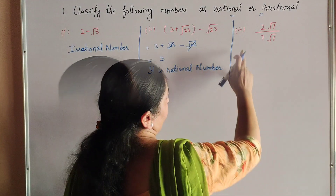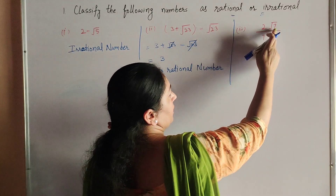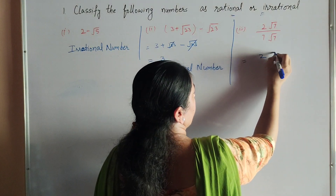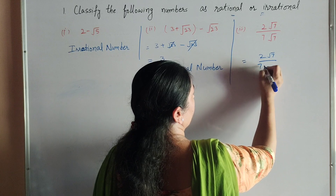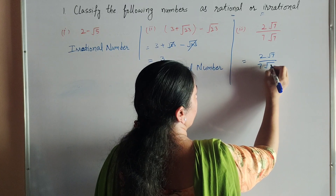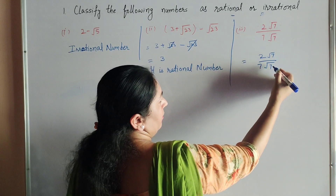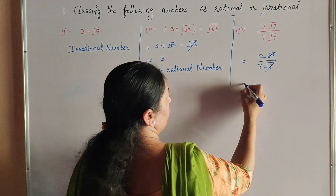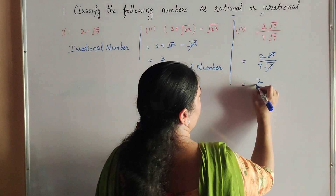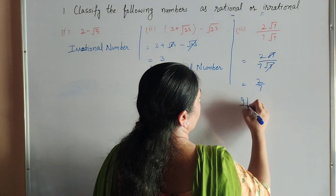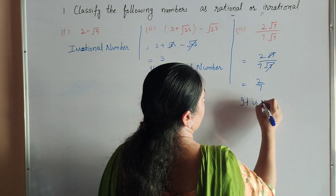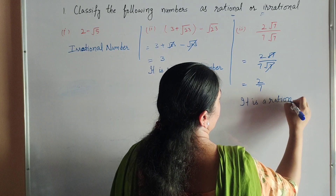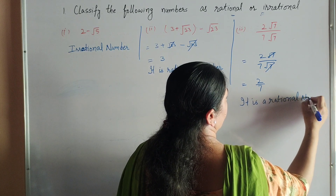Now we move to the third part: 2 times square root 7 over 7 times square root 7. So square root 7 and square root 7 are both cancelled. It is equal to 2 over 7, so it is also a rational number — 2 over 7 is a rational number.